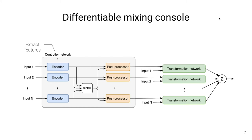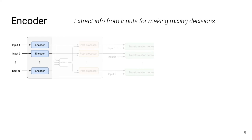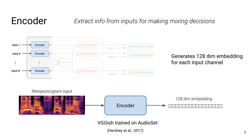The encoder's role here is to extract features from the inputs that will be useful for creating the mix. The post processor's goal then is, given this information about the input and all the other input channels — given by a context vector — to predict the parameters for the respective channel. These parameters are passed on to the transformation network along with the original audio, such that the transformation network can, in the time domain, process the audio and produce a final mix by summing all of those outputs. The encoder is a simple CNN with a VGG-ish type that's been pre-trained on AudioSet. It takes as input a mel spectrogram and outputs a 128-dimensional embedding, and we apply this same encoder to all of the inputs to generate these embeddings.